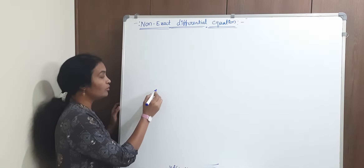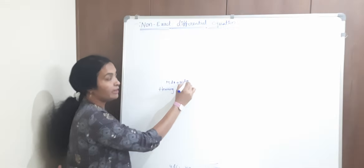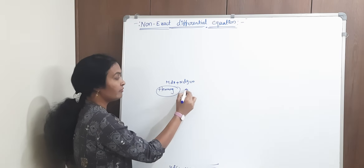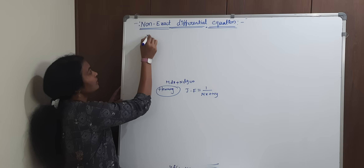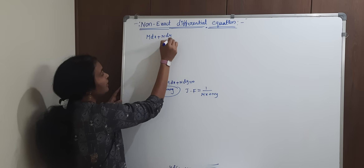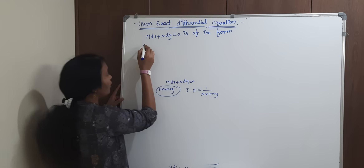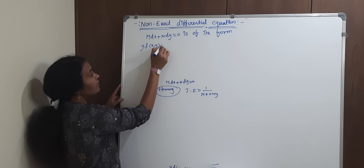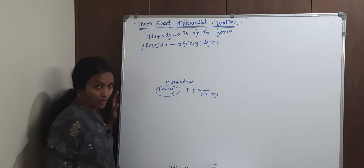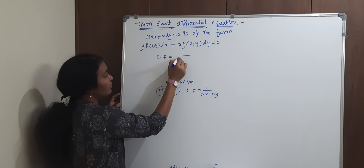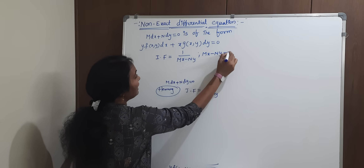First, recall: if the given equation is a homogeneous differential equation in the form mdx plus ndy equal to 0, the integrating factor is 1 by mx plus ny. Now, suppose the equation mdx plus ndy equal to 0 is of the form y·f(x,y) dx plus x·g(x,y) dy equal to 0. Then our integrating factor is 1 by mx minus ny, where mx minus ny must not equal zero.